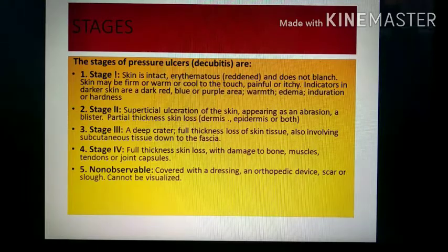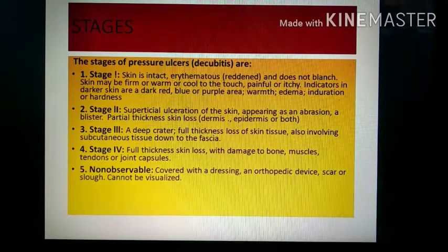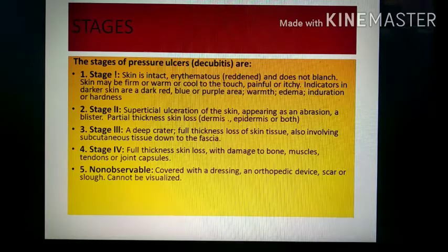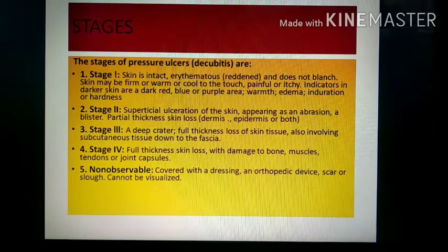In darker skin, indicators include dark red, blue, or purple areas, warm areas, edema, and induration. Induration is the localized hardening of soft tissue. Normally the tissue is soft, but when it becomes hardened, that is called induration.